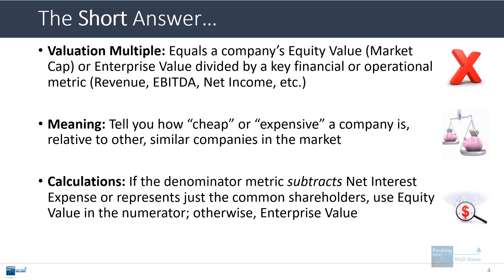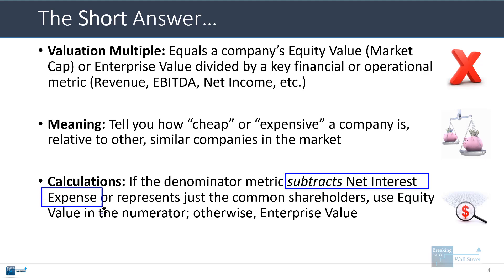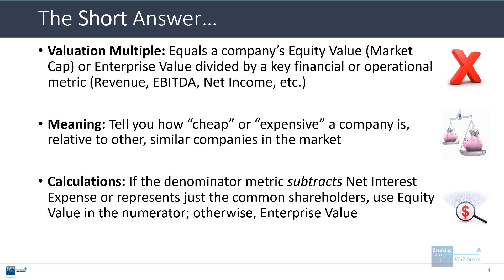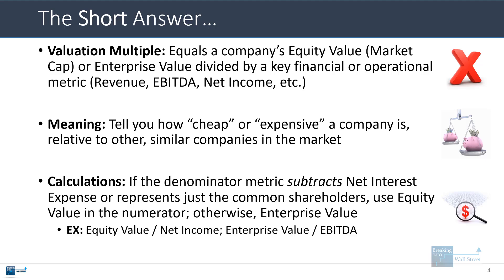There's a lot of confusion about whether to use equity value or enterprise value. The simplest way to decide: if the metric in the denominator subtracts the net interest expense or represents just the common shareholders, use equity value in the numerator. Otherwise, if it does not subtract net interest expense or represents all investors, use enterprise value. For example, with net income you use equity value because net income deducts interest expense. But with EBITDA, you use enterprise value because it does not deduct net interest expense.